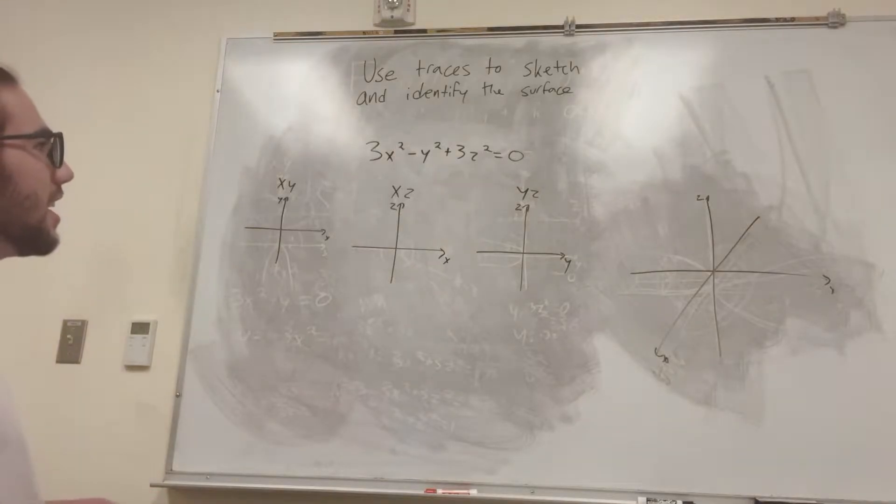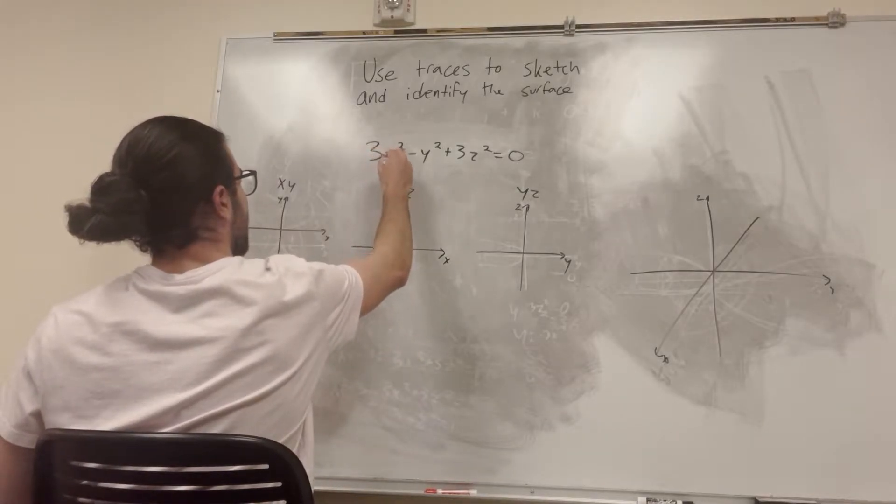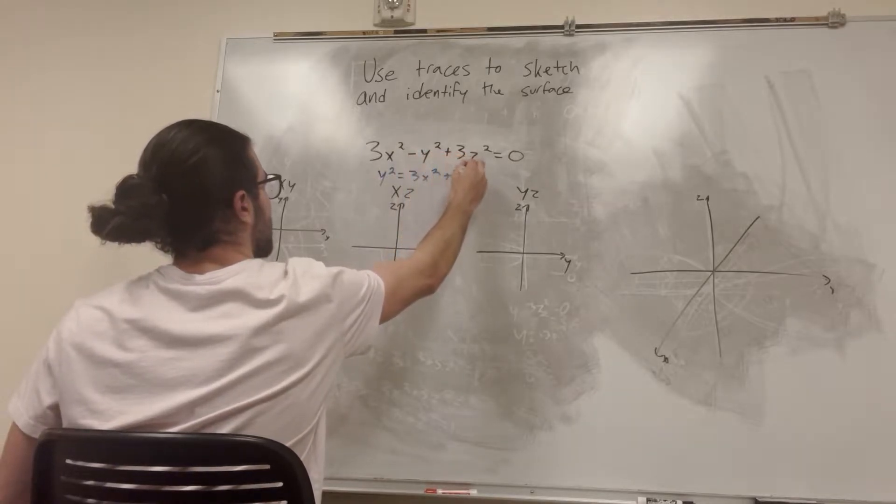We have 3x squared minus y squared plus 3z squared is equal to zero. So I'm looking at this, and immediately I just want to rewrite it as y squared is equal to 3x squared plus 3z squared.